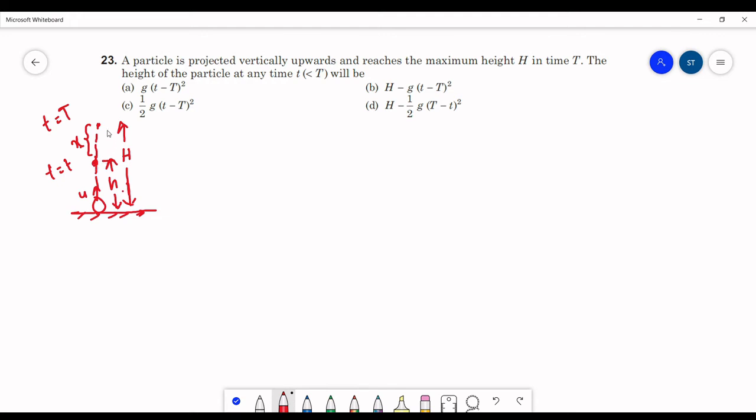Now only concentrate on this part. If this distance is x, this will also be equal to x. The total time of ascent is given as capital T. Up to here the time taken is small t, so the time taken from this point to maximum height will be capital T minus small t.